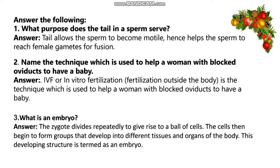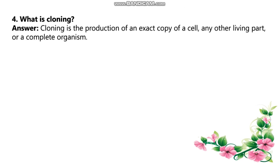What is an embryo? The answer is: the zygote divides repeatedly to give rise to a ball of cells. The cells then begin to form groups that develop into different tissues and organs of the body. This developing structure is termed an embryo. What is cloning? Cloning is the production of an exact copy of a cell, any other living part, or a complete organism.